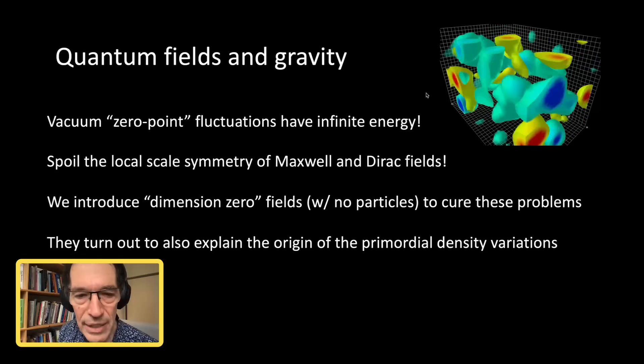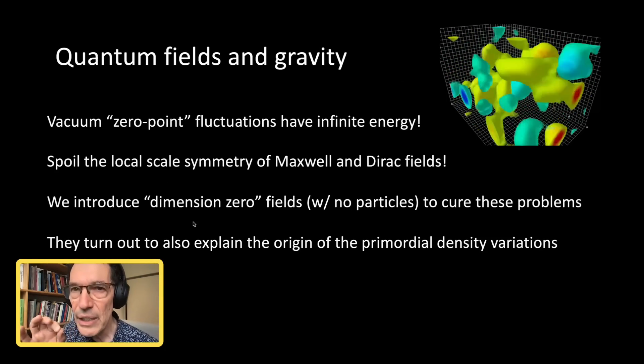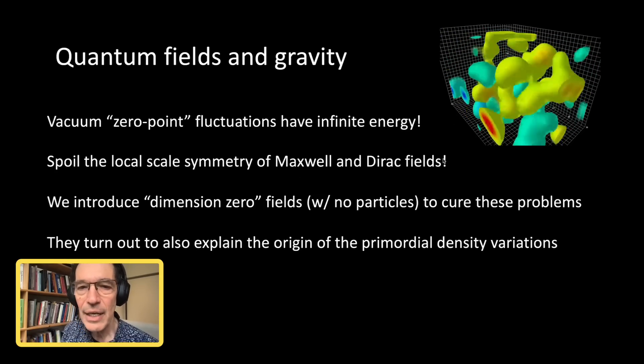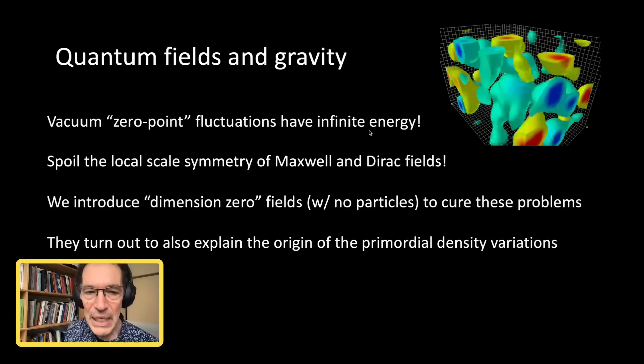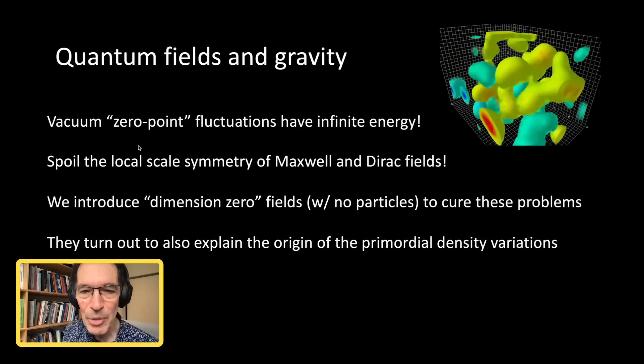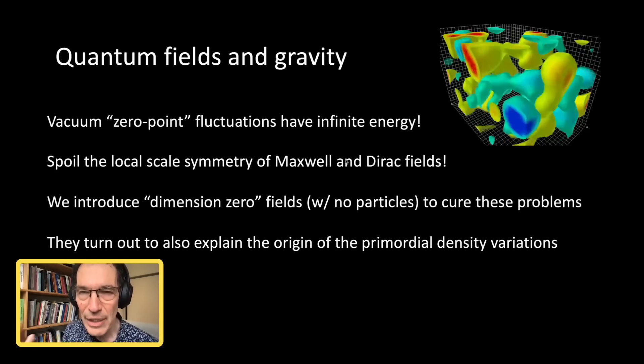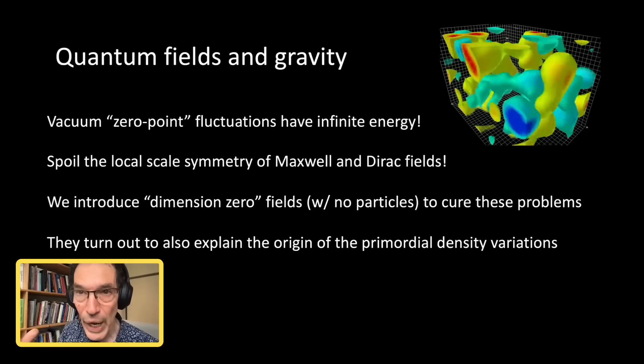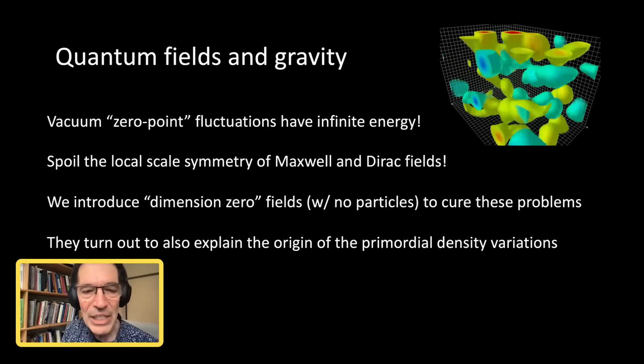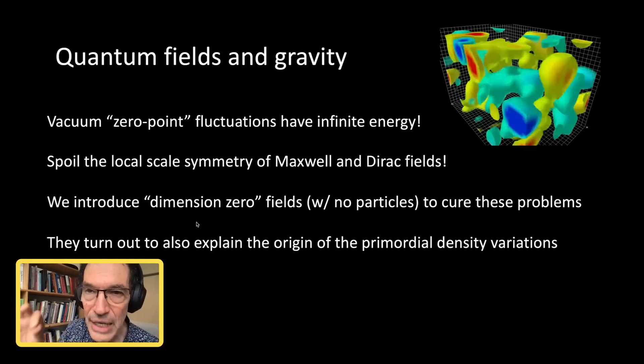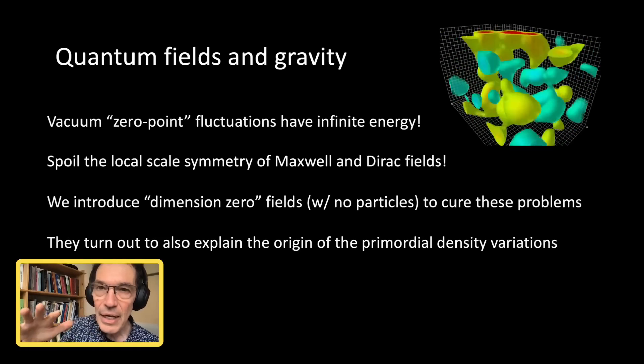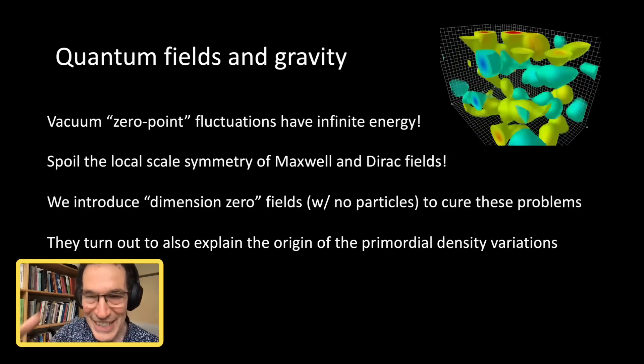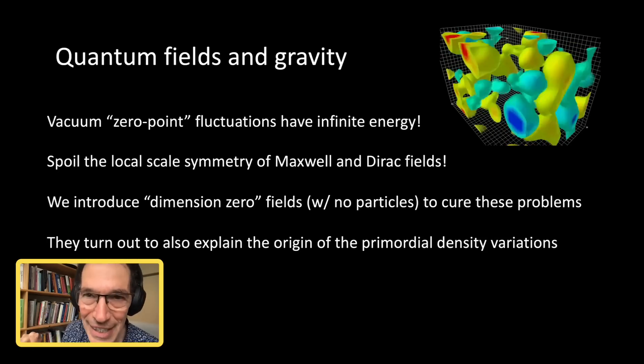So what we have done recently, very recently, is we discovered an entirely new mechanism, A, for canceling the energy in the vacuum, B, for restoring the symmetry of Maxwell and Dirac, the local scale symmetry. And we found we could do that in a very unique way. We call them dimension zero fields. They're rather peculiar fields. They do not have any particles. They merely exist, if you like, in the vacuum. So all they do is sit there and cancel out these various diseases in the vacuum.